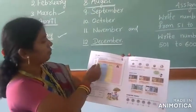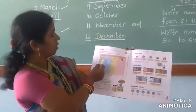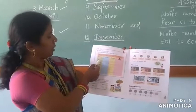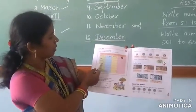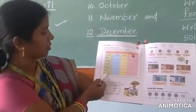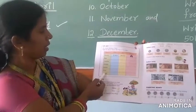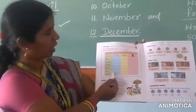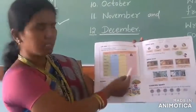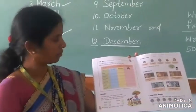My family birthday chart. Mummy, Papa, Grandma, Grandpa, Brother, Sister, Myself. Write the date of birth and the birth month. Okay. Thank you, children.